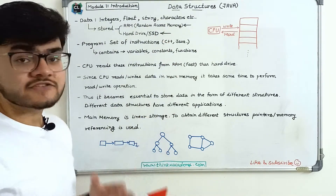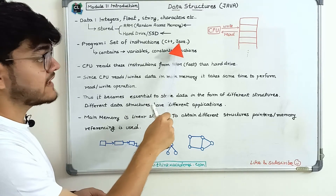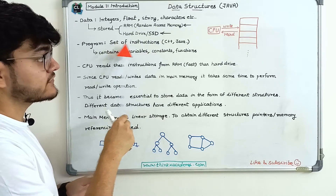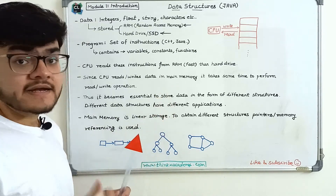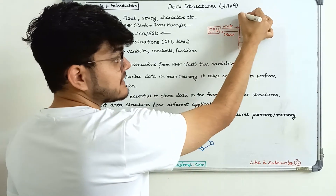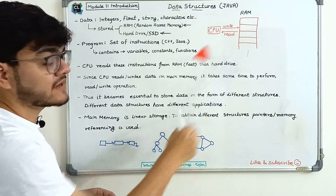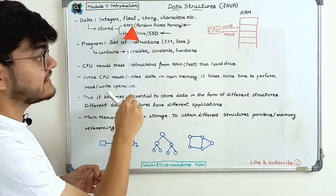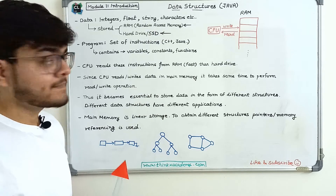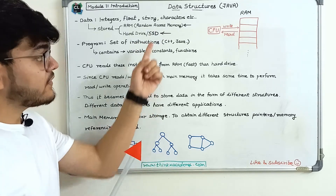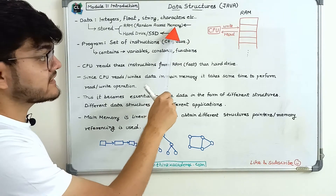Random access memory is a faster memory with faster access. All the instructions you write — whether in Java or C++ — are a set of instructions for the CPU. The CPU is the central processing unit; it takes all the instructions from the program and runs them at execution time. The instructions get loaded into RAM. Data is stored permanently in the hard drive and SSD, but the CPU accesses only the data stored temporarily in RAM.